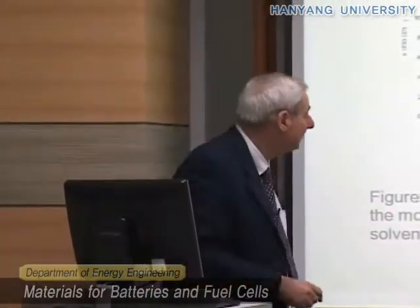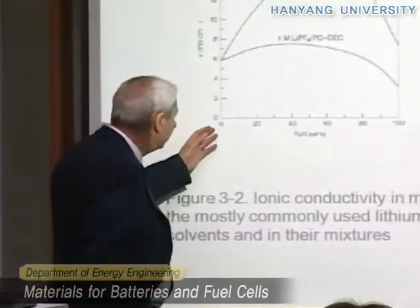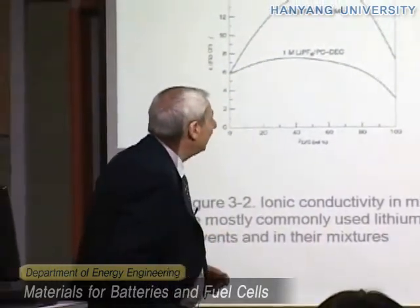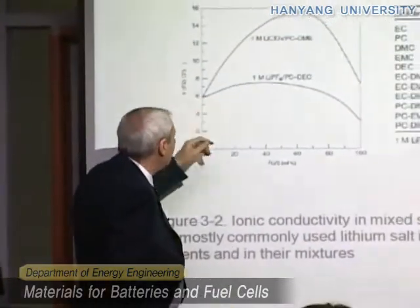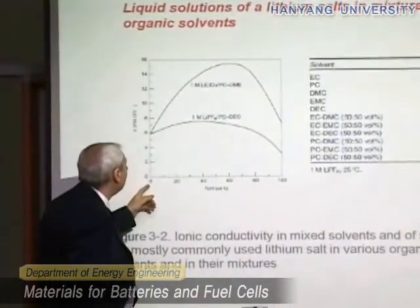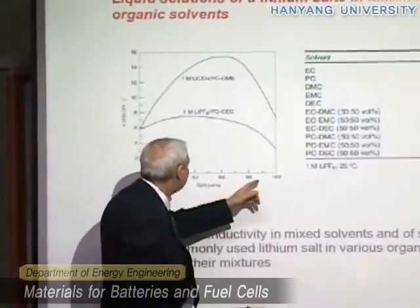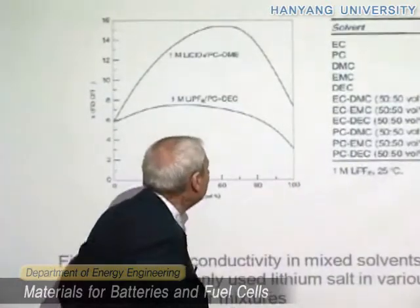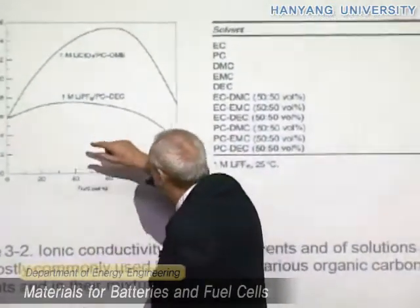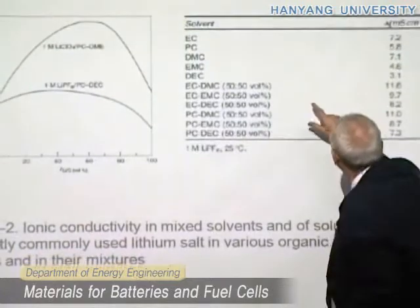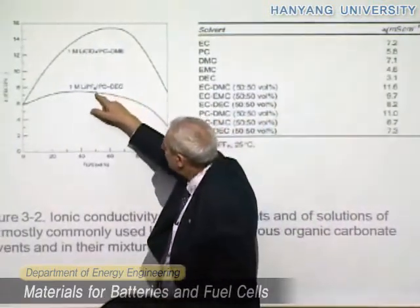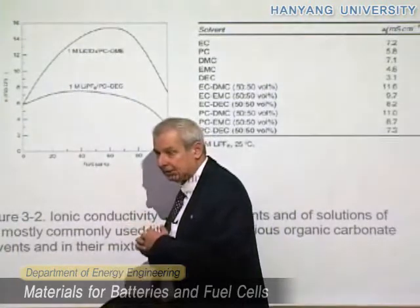This is a graph in which we report the conductivity versus the composition. On the left there is the situation for pure PC, on the right is the situation with pure DSE. The conductivity of PSE is 5.8 here, the conductivity of DSE is 3.1 here. But you see that when we mix the two, we have improving conductivity with a maximum, because here we share the properties.